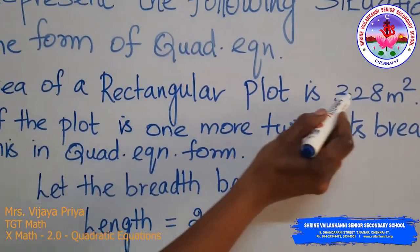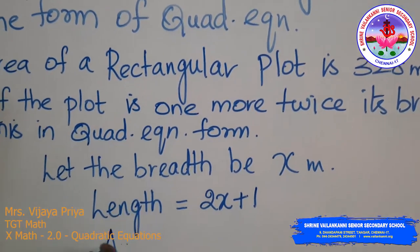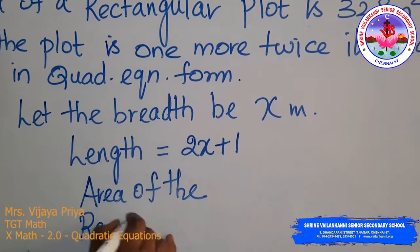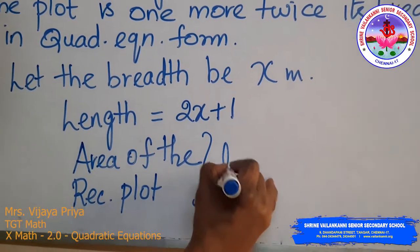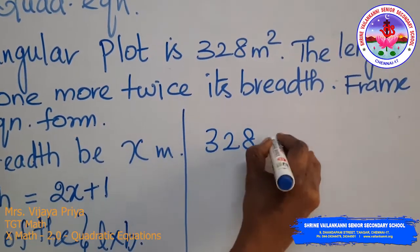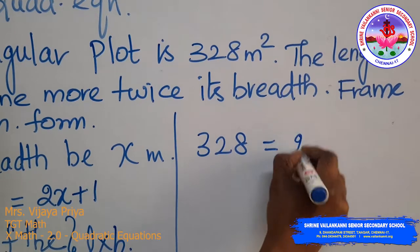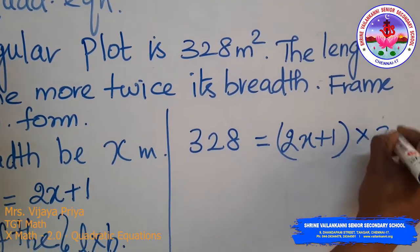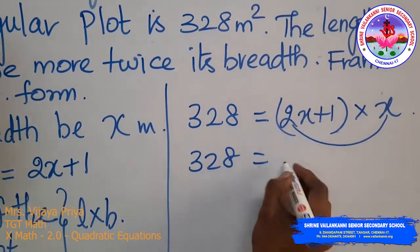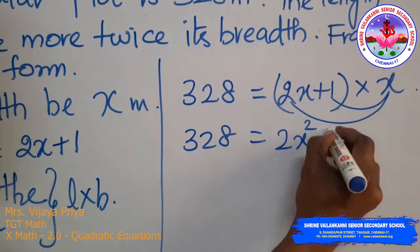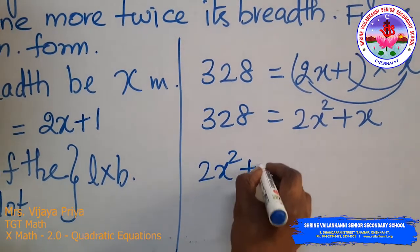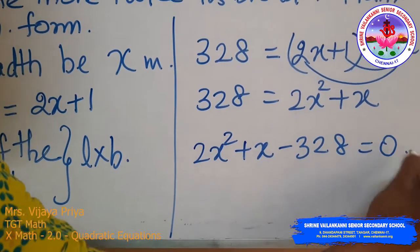Given that the area of the rectangular plot is 328 m², and area = length × breadth: 328 = (2x + 1)(x). Expanding: 2x² + x = 328. Bringing 328 to the other side: 2x² + x − 328 = 0.